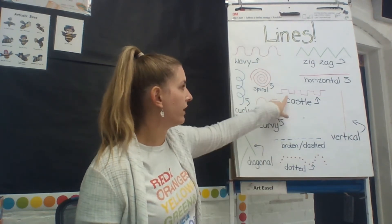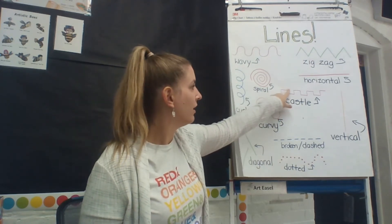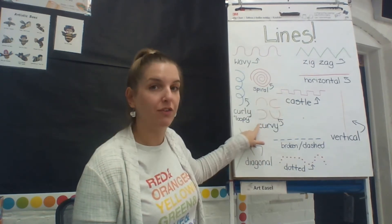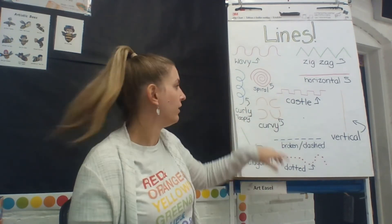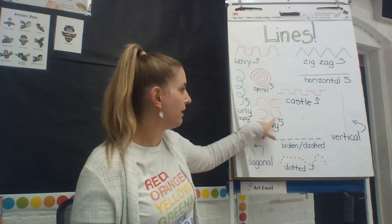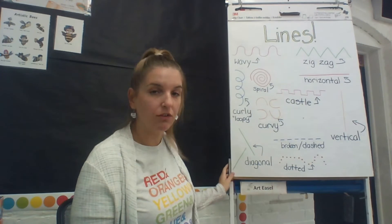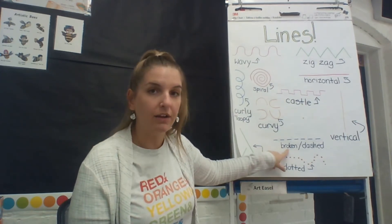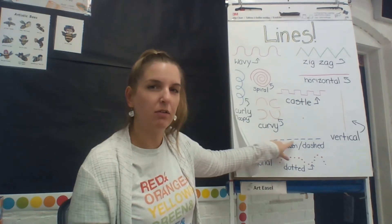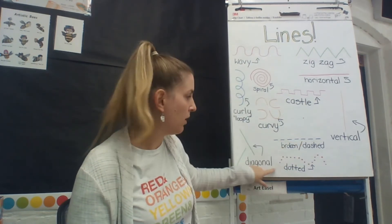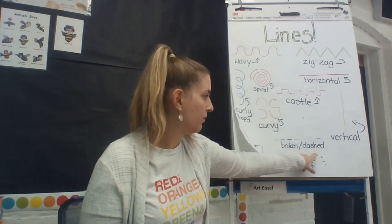You can also have a castle line, which is kind of like making little squares or rectangles. You could have a curvy line — it's just a line that you bend, and it could be down, sideways, or up. It could look like a rainbow or horseshoe and go any direction. You can also have a broken line or a dashed line, which has little spaces in between — it's broken up into little pieces. Or you could have a line completely made out of dots, and they could go any which direction.